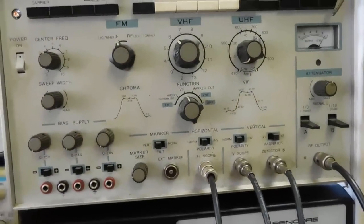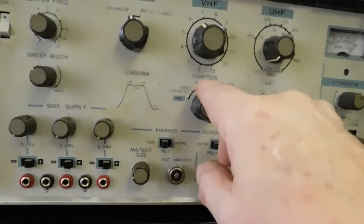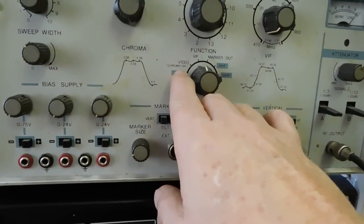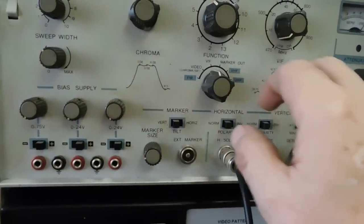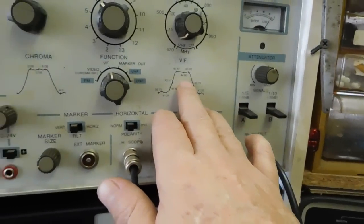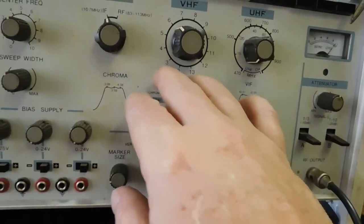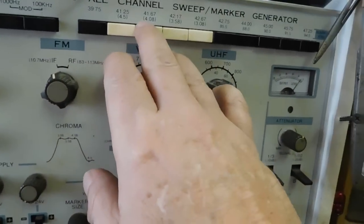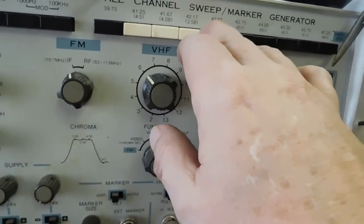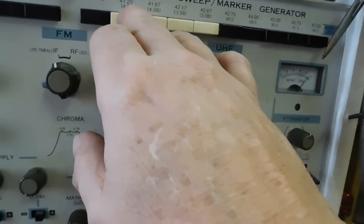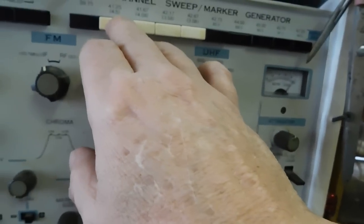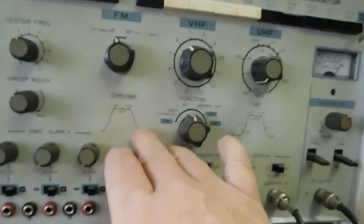And then video or chroma and sound IF. The chroma would be kind of similar to the IF frequency. And when you've got that hooked up, then you've got these markers right here that's underneath: the 3.58, 3.08, 4.08, and 4.5 would be used for this.